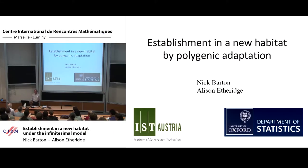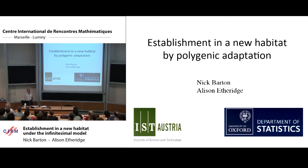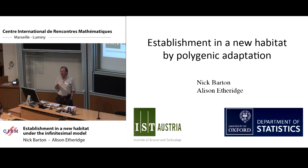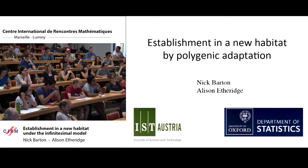Thanks very much to the organisers. It's very nice to be back at CIRM again, back in the sun. We'll be talking about establishment of a population in new habitat, a habitat where initially the growth rate is negative, and so the only way the population can survive in the long run is by evolving a higher growth rate, evolving ultimately a positive growth rate. This problem arises in various contexts. It's usually termed evolutionary rescue — the idea being that for one reason or another, individuals find themselves in a bad habitat and the only way they can establish is by evolving increased fitness.